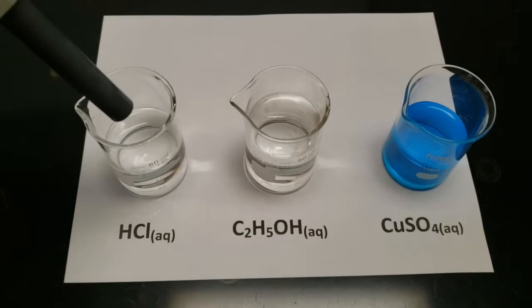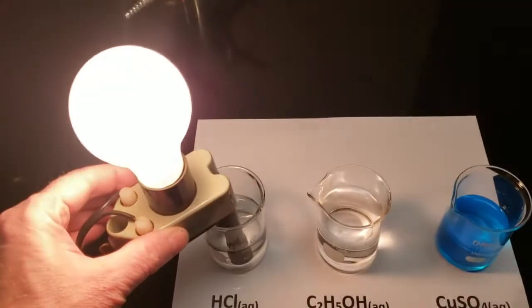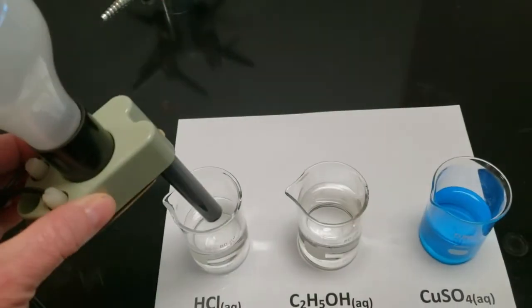First, we're going to test the acid, and the light comes on. That means the HCl actually dissociated into the H plus and the Cl minus.